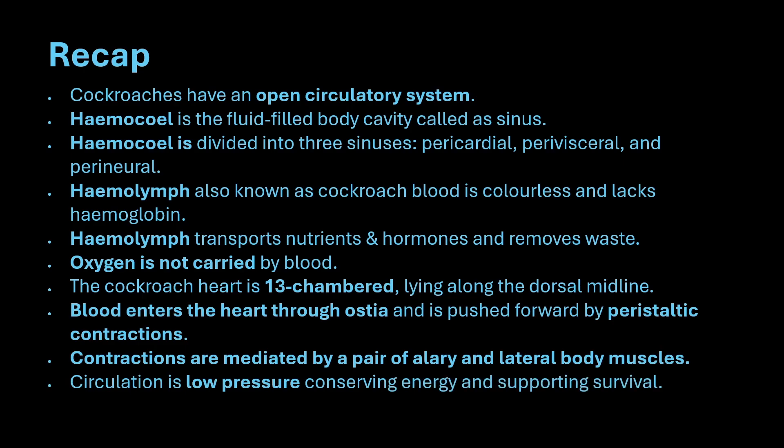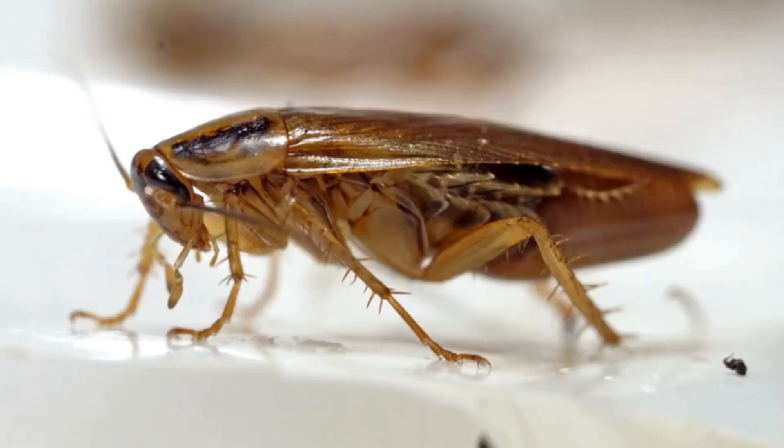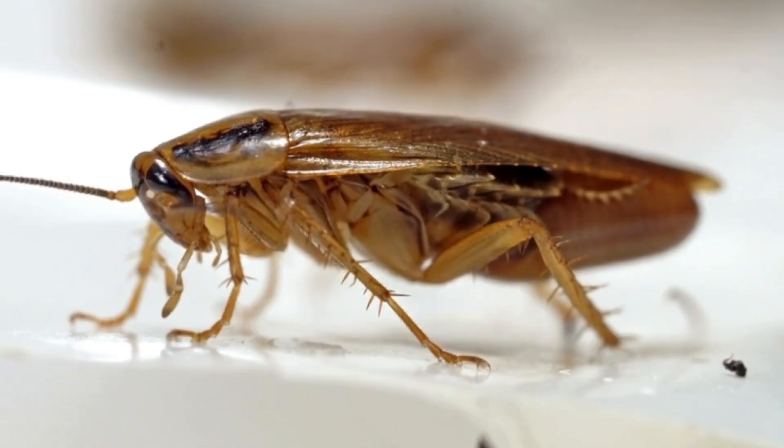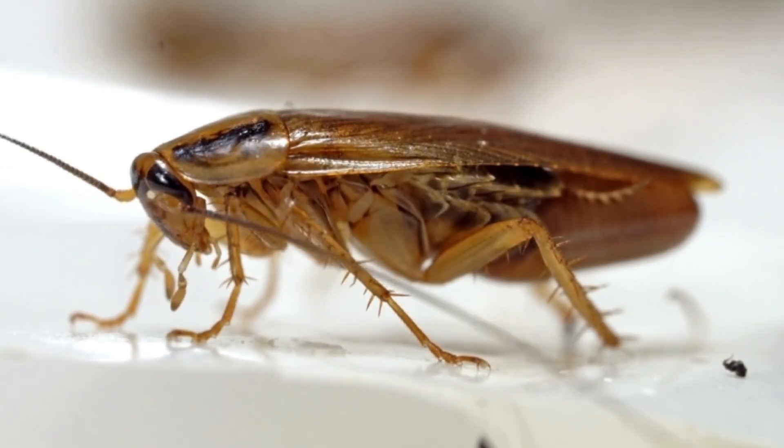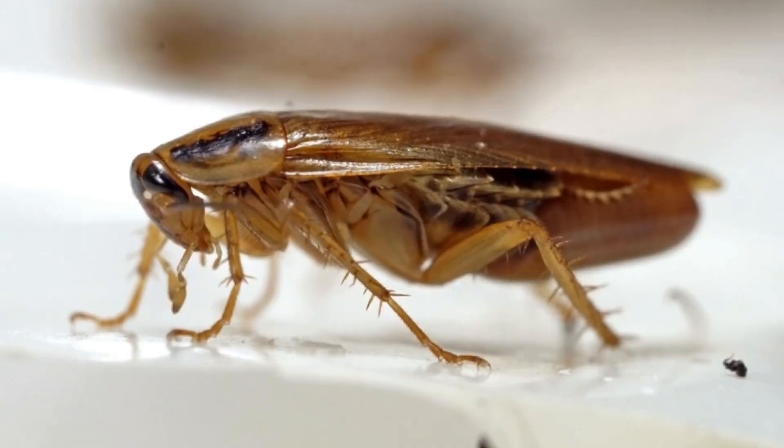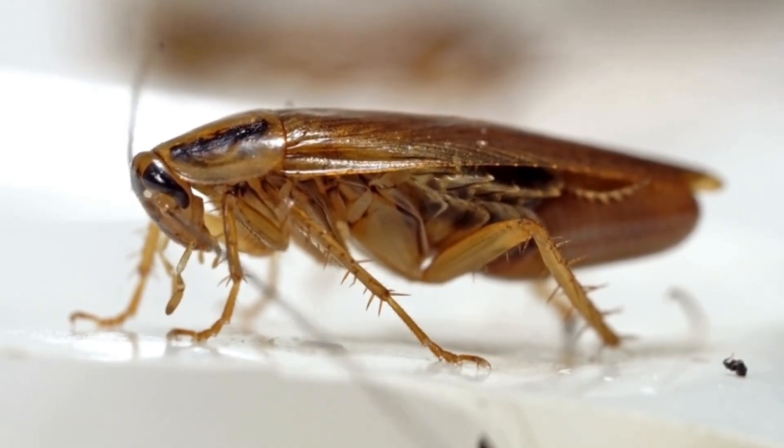Circulation is low pressure, conserving energy and supporting survival. In a sense, the cockroach's circulatory system is not just different, it's perfectly evolved for survival. So in our next video, we will uncover how oxygen is transported without blood through a completely separate respiratory network.